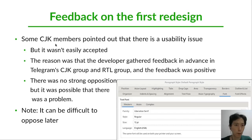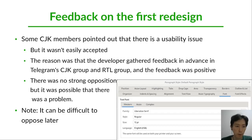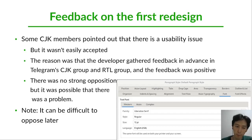Some CJK members pointed out there was a usability issue, but it wasn't easily accepted. The reason was that the developer had gathered feedback in advance in the Telegram CJK group and RTA group, and the feedback was positive — there was no strong opposition. But there was a problem, and communication is very difficult in this case — it can be difficult to raise opposition later.